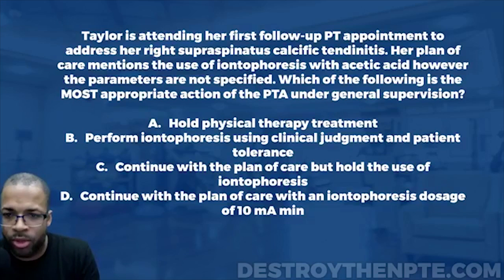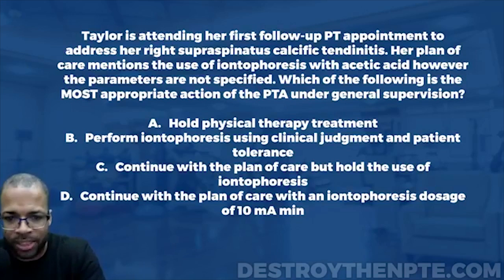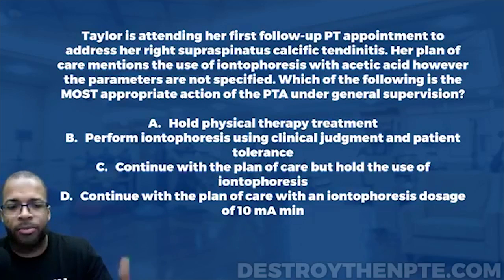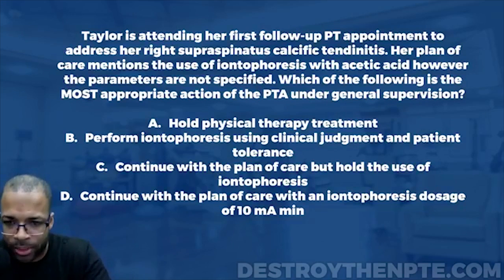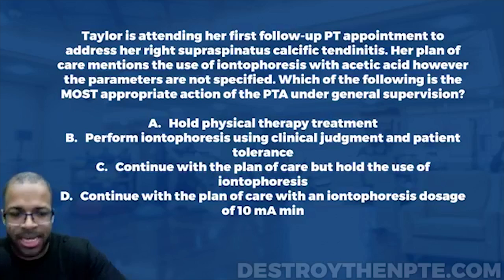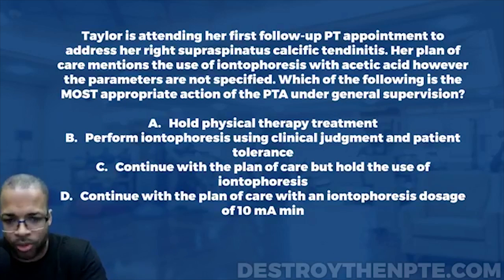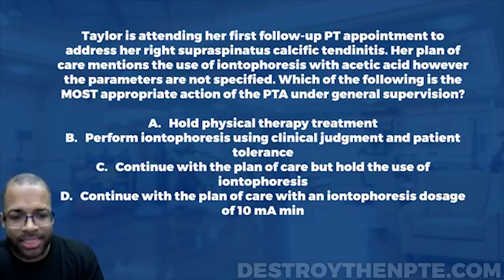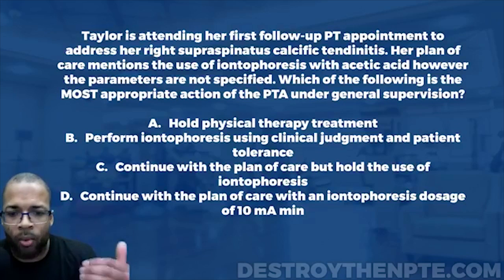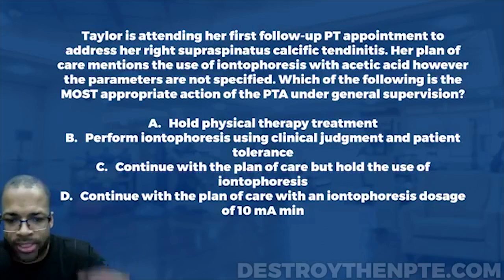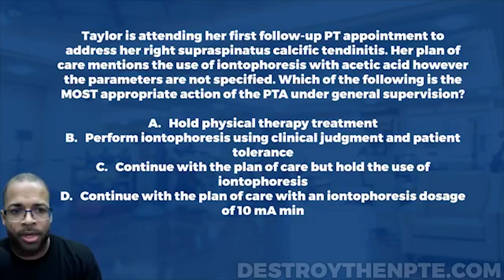Answer A is hold physical therapy treatment. B is perform iontophoresis using clinical judgment and patient tolerance. C is continue with the plan of care but hold the use of iontophoresis. And D is to continue with the plan of care with an iontophoresis dosage of 10 milliamp minutes.